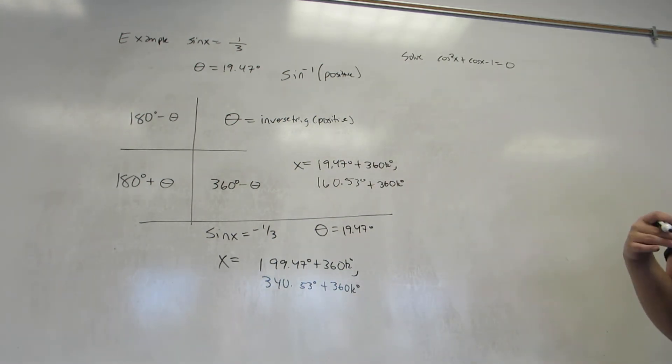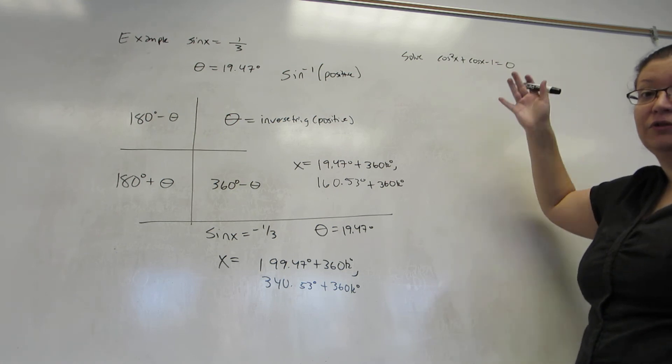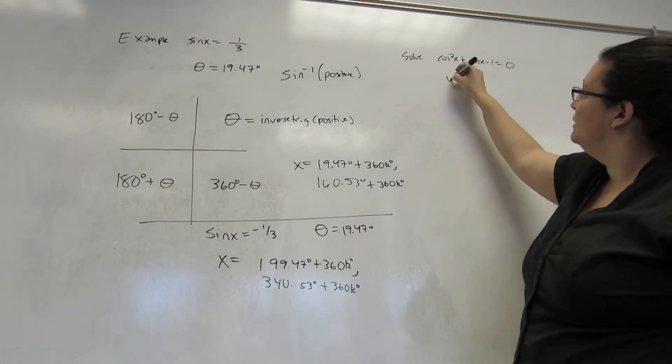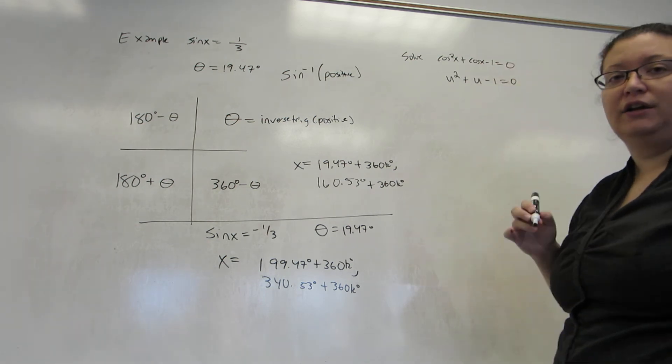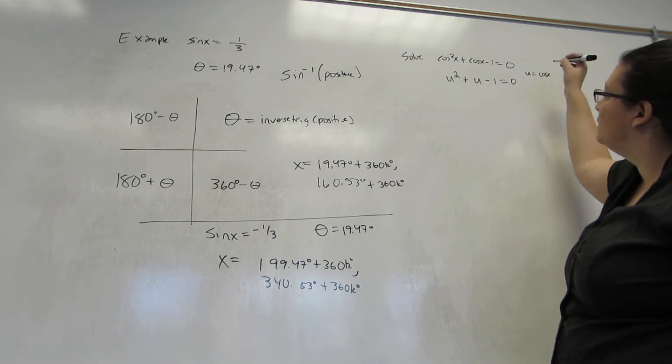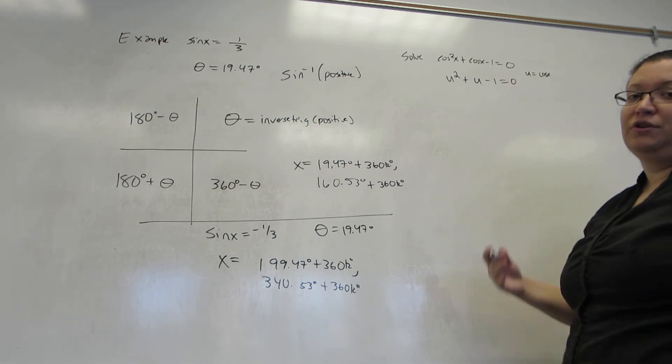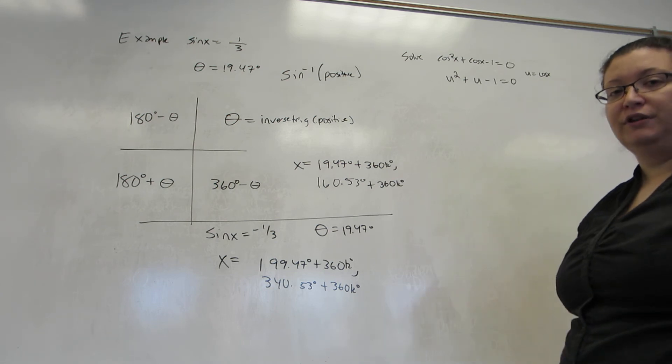When we look at this, we need a single trig function, but I don't have any trigonometric identities that turn cosine squareds of x's into cosine x's or vice versa. But what I do notice is that this kind of looks like this quadratic equation, where u is cosine x. So, I try to solve the quadratic. First step is to say, does it factor? And unfortunately, the answer is no.